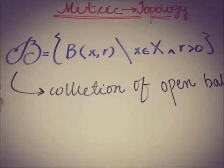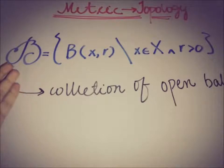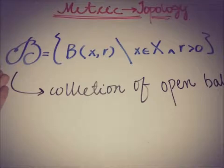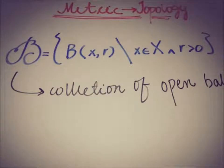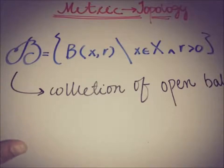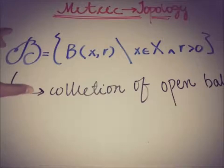This collection of all open balls in a metric space is denoted B — the representation of a basis. We claim that this collection of all open balls in a metric space is indeed a basis of that space. We will prove this claim by showing the collection satisfies the two main properties of being a basis.